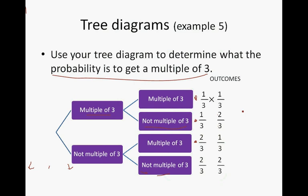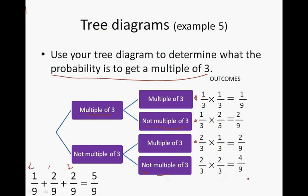Combining the outcomes: there is a 1/9 chance to throw multiple-multiple (1×1=1, 3×3=9). Multiple then not-multiple is 2/9 (1×2=2, 3×3=9). Not-multiple then multiple is also 2/9. Not-multiple then not-multiple is 4/9. Since they share the same denominator, the probability of getting at least one multiple of 3 is 1/9 + 2/9 + 2/9 = 5/9.